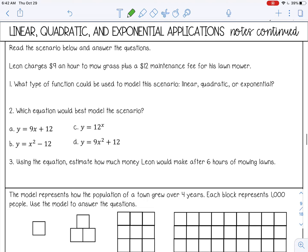Read the scenario below and answer the questions. So Leon charges $9 an hour to mow grass plus a $12 maintenance fee for his lawnmower. What type of function can be used to model this scenario? Linear, quadratic, or exponential? He charges $9 an hour plus a $12 fee. This $9 an hour, you can also say $9 per hour. And if you're making money per hour, that's growing at a steady rate. Every hour, you're adding $9. So if you're growing at a steady rate, that means it's linear. It has a constant rate of change.